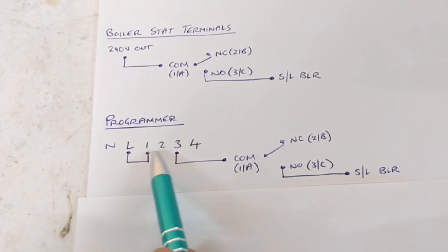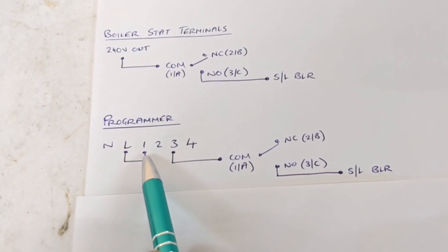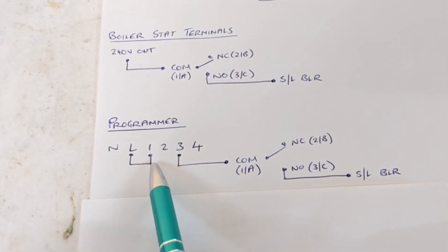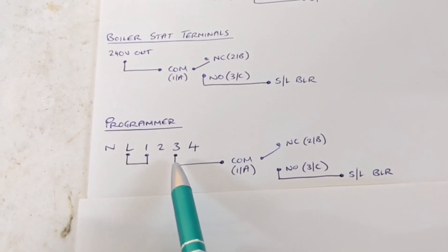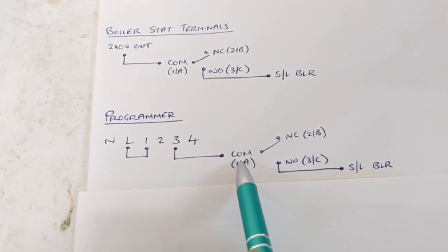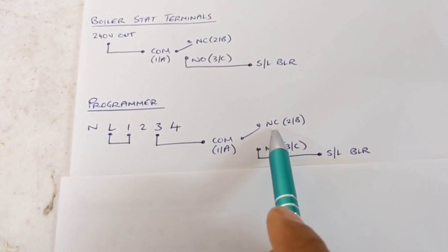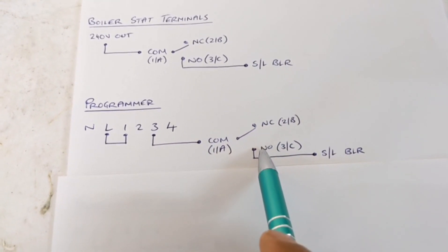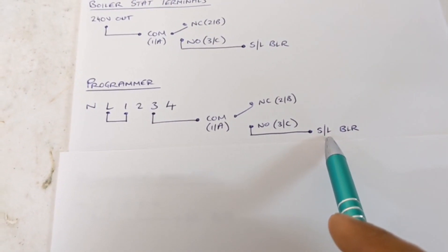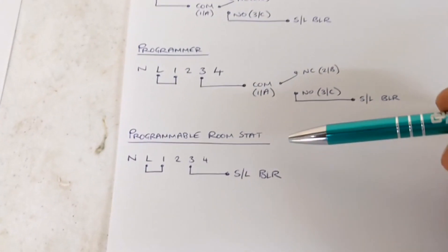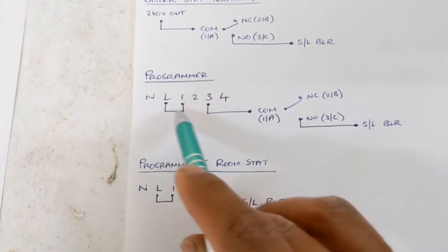At rest, the 240 volts is sitting between terminals one and two, not doing anything. When you turn the programmer on, that sends 240 volts to number three, which is the common on the programmer. That then starts the sequence: 240 volts to the common on the room stat, to normally closed, then when you turn the heat up it goes to normally open and then goes to the boiler and gets it to fire up.